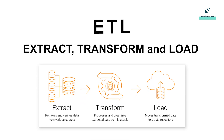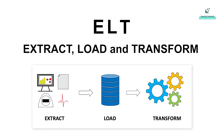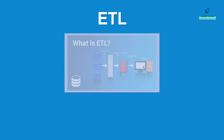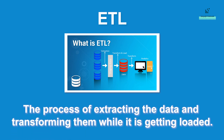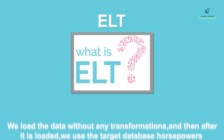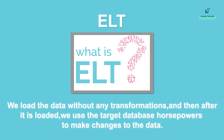ETL stands for Extract, Transform, and Load whereas ELT stands for Extract, Load, and Transform. The distinction is based on the order of events. ETL is the process of extracting the data and transforming it while it is getting loaded into the database. In ELT, we load the data without any transformations, and then after it is loaded, we use the target database's horsepower to make changes to the data, allowing us to massively increase the data footprint and transformation capabilities.